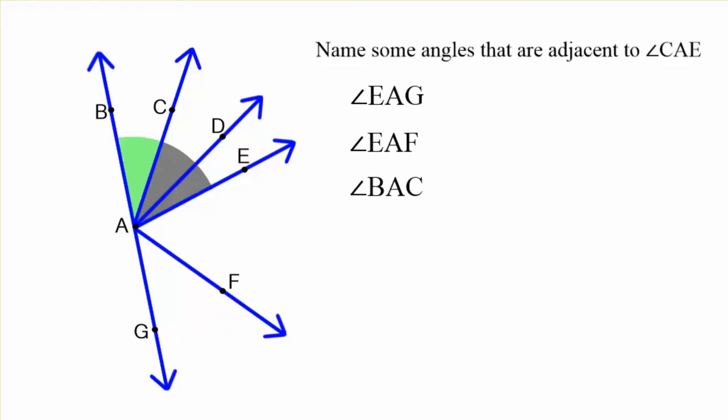Now let's find a couple that are not going to be adjacent. Let's see. Well, let's find one that overlaps. Let's go with DAF.